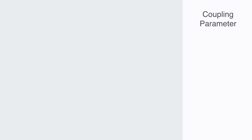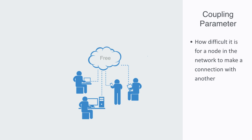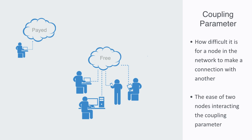One way of contextualizing the degree of connectivity to a network is by talking about how easy or difficult it is for a node in the network to make a connection with another one. Because the overall connectivity emerges out of the local actions of the nodes, if we make it difficult for them to interact, there will be a lower overall connectivity. We might call this ease of two nodes interacting or coupling the coupling parameter to the network.